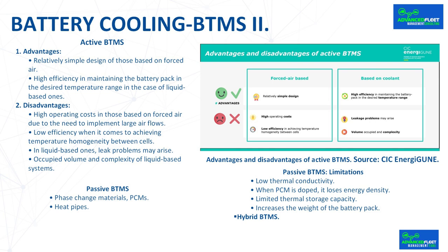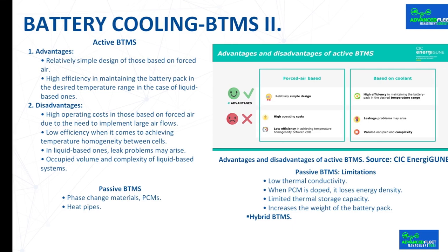The liquid cooling examples mentioned are all indirect systems. One of the main disadvantages of indirect systems compared to direct ones is the loss of efficiency in heat transfer, mainly due to resistance at the interface between the duct containing the refrigerant and the cell itself. However, indirect systems, since there is no direct contact between the fluid and the electrical components, allow the use of conventional coolant liquids already used in combustion vehicles. This low cost makes indirect cooling the preferred alternative today for manufacturers implementing liquid cooling.